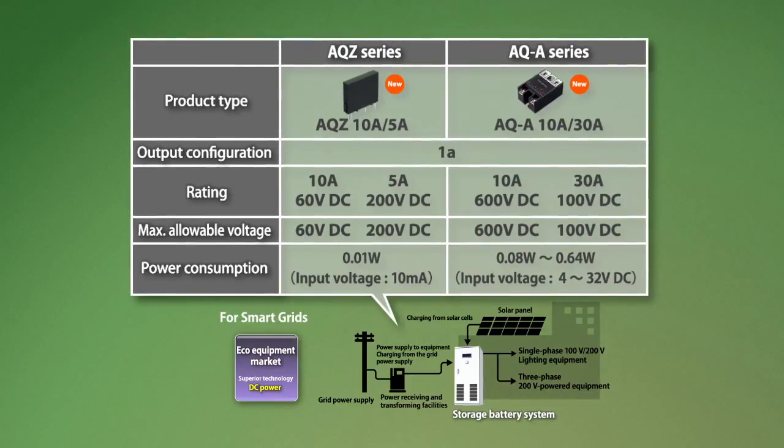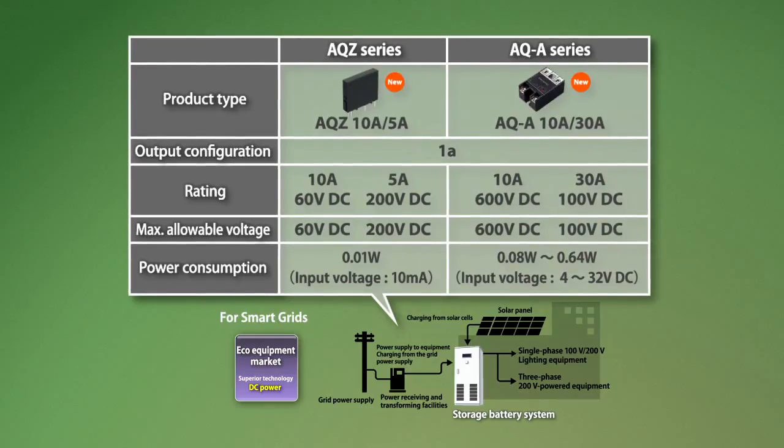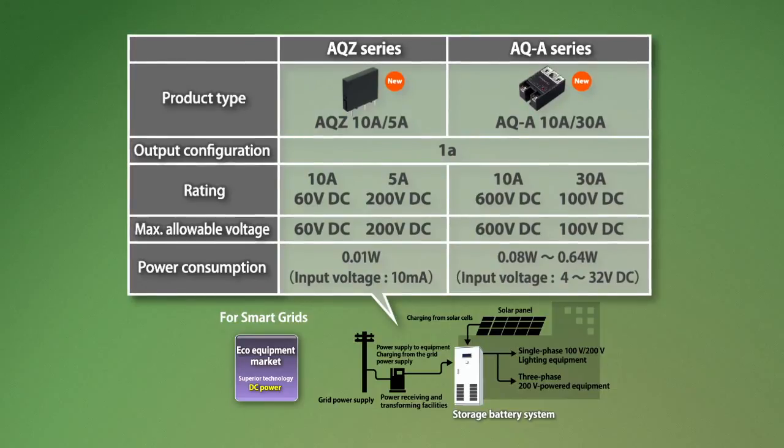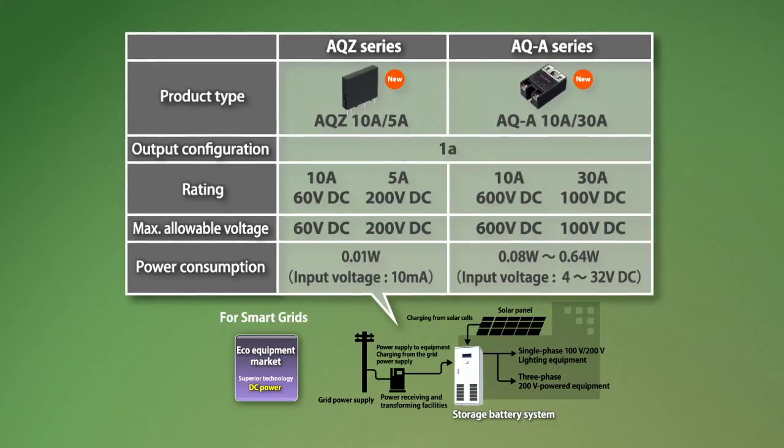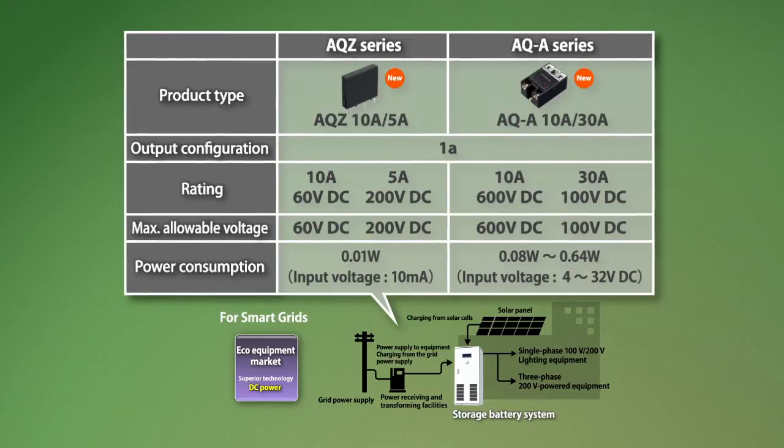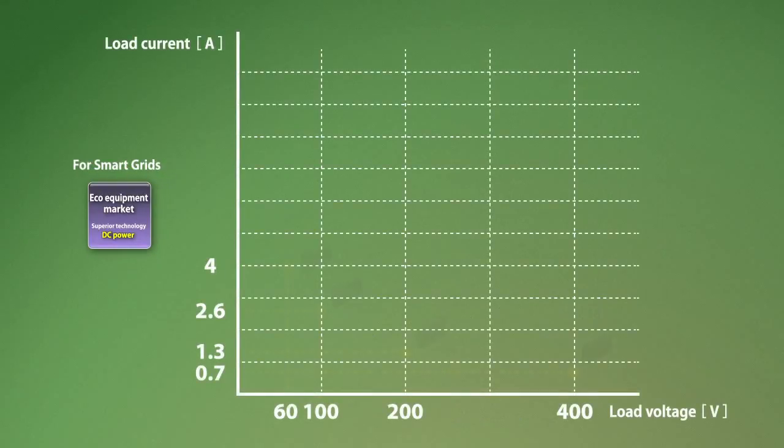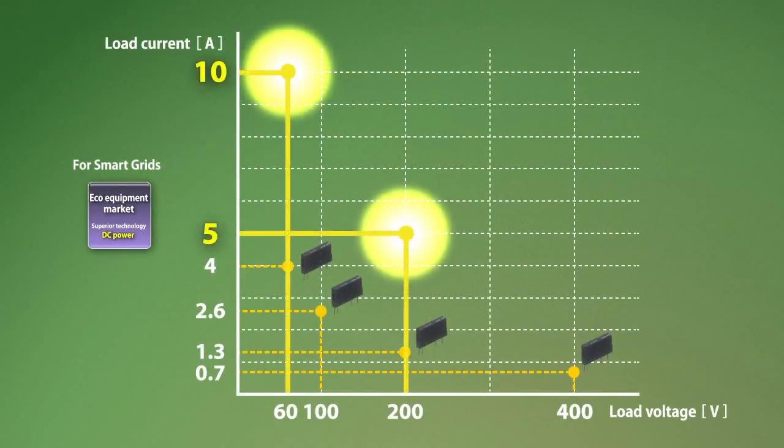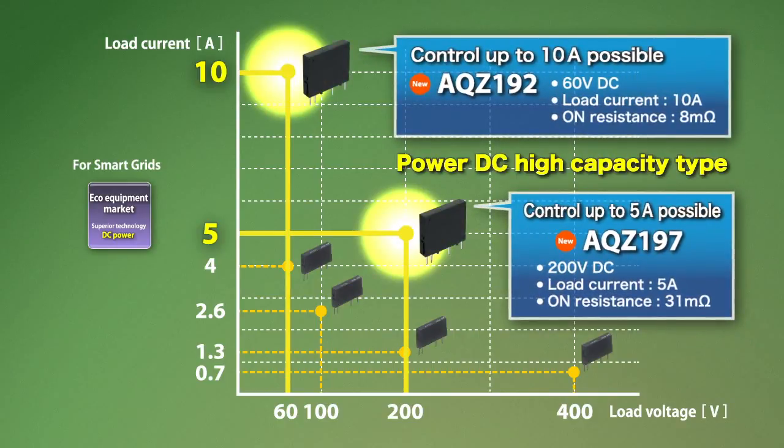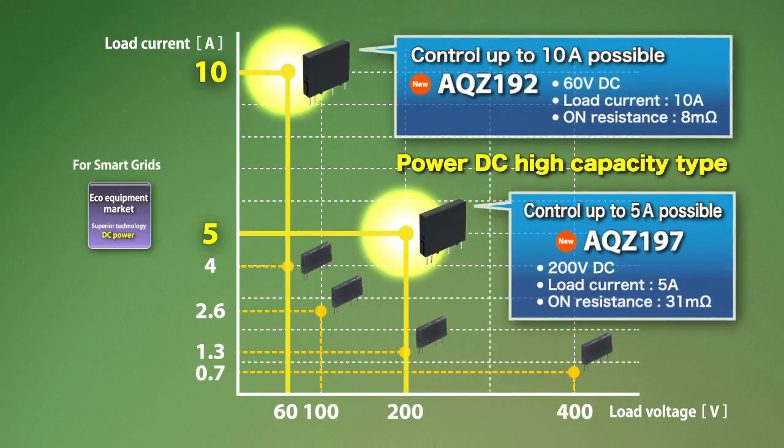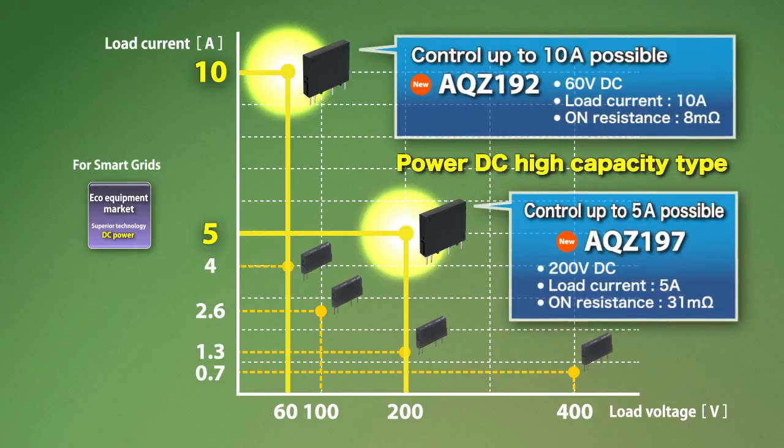PhotoMOS are well suited for battery charging and discharging tasks, and for their ability to control high voltage and powerful currents. The Panasonic AQZ series and AQA series are semiconductor device products that can control high voltage and powerful currents. The AQZ series is able to control 10A 60V DC and 5A 200V DC. The ability of the AQZ series to control high DC current best meets the needs of eco-equipment for smart grid systems.